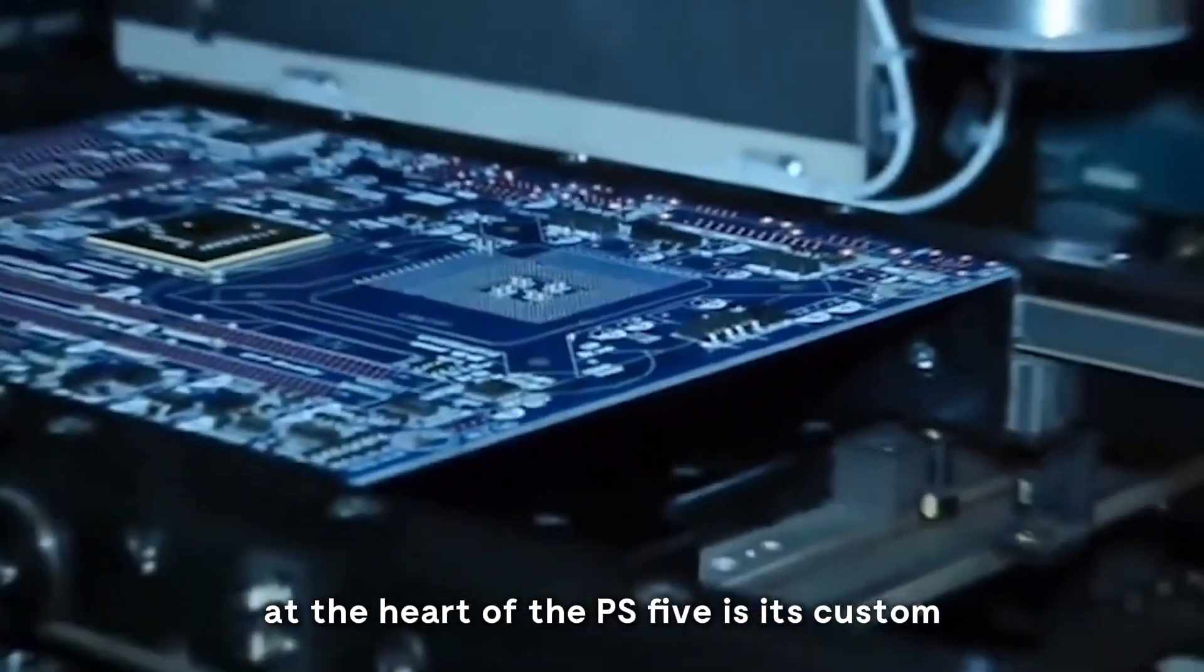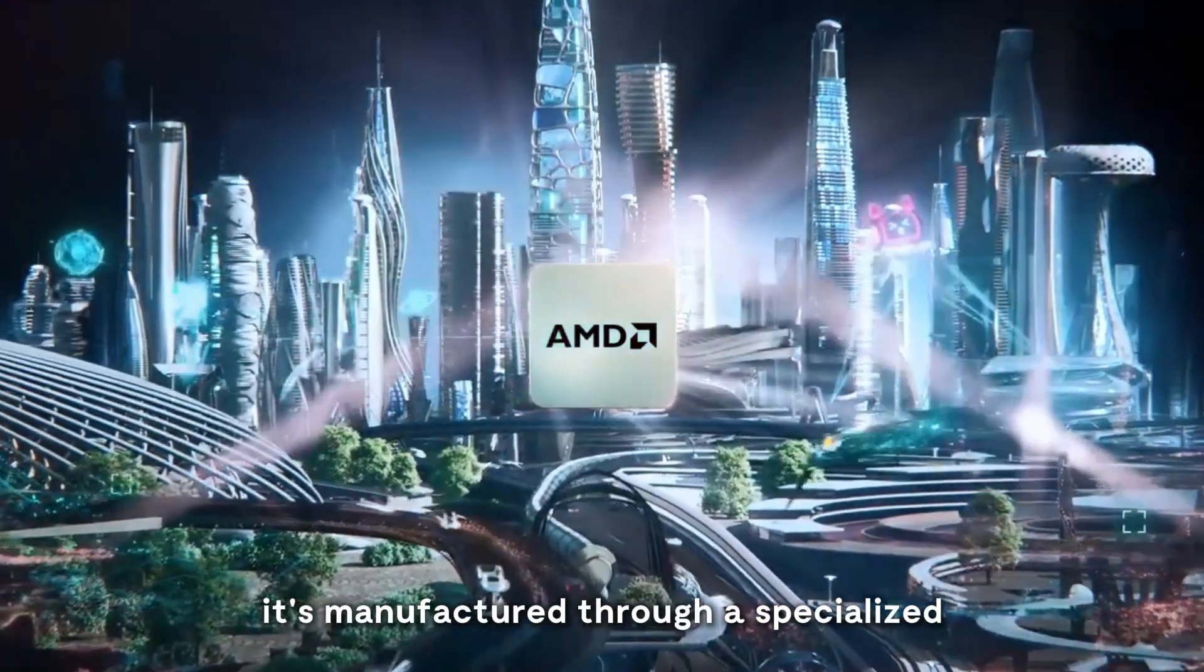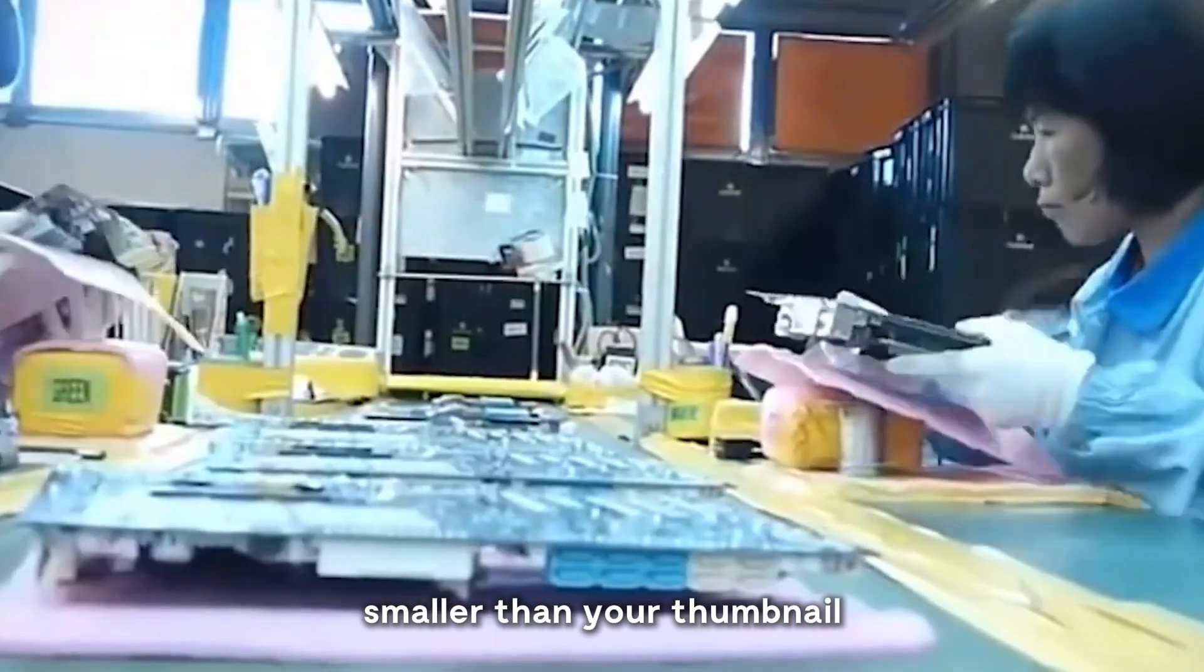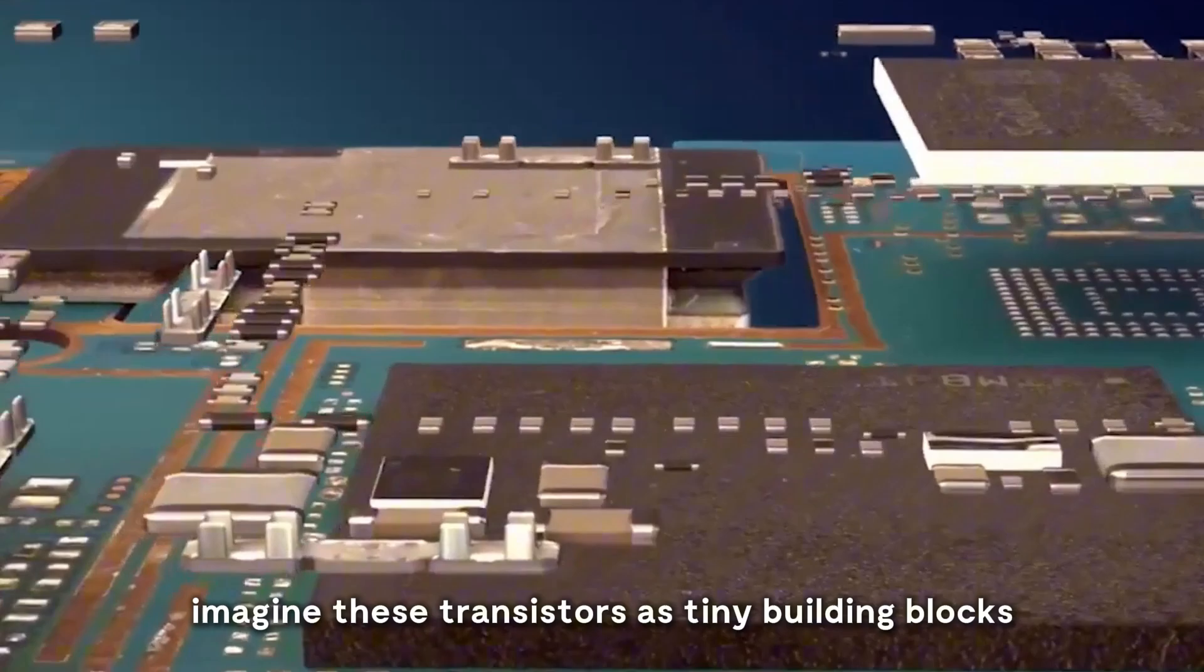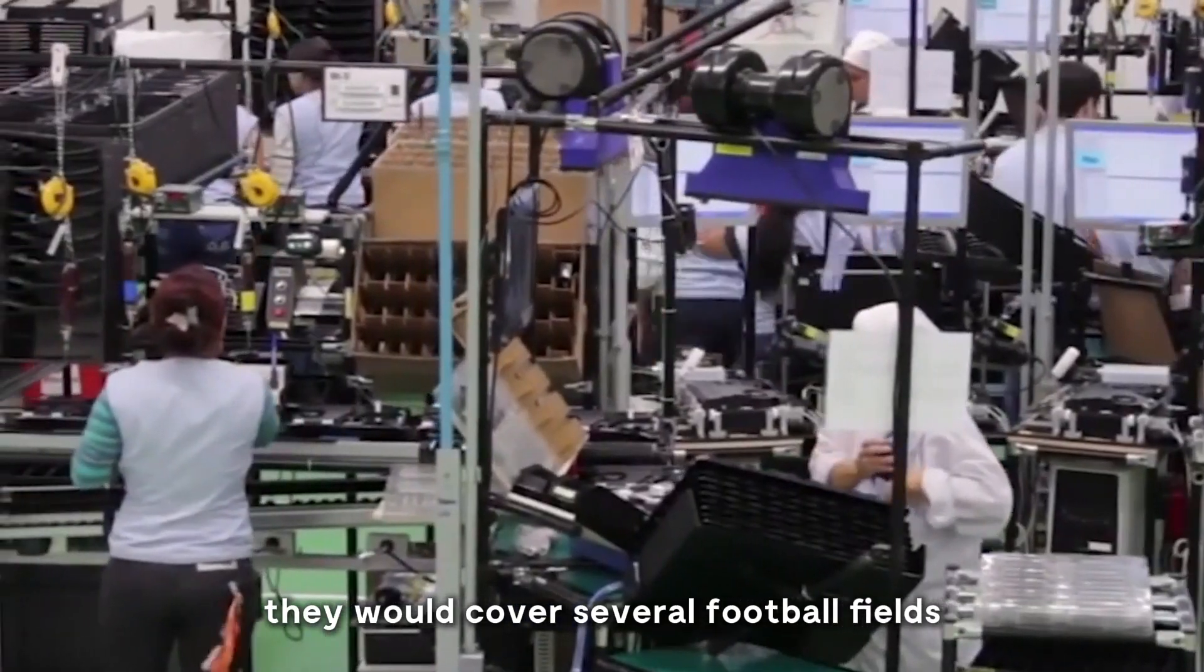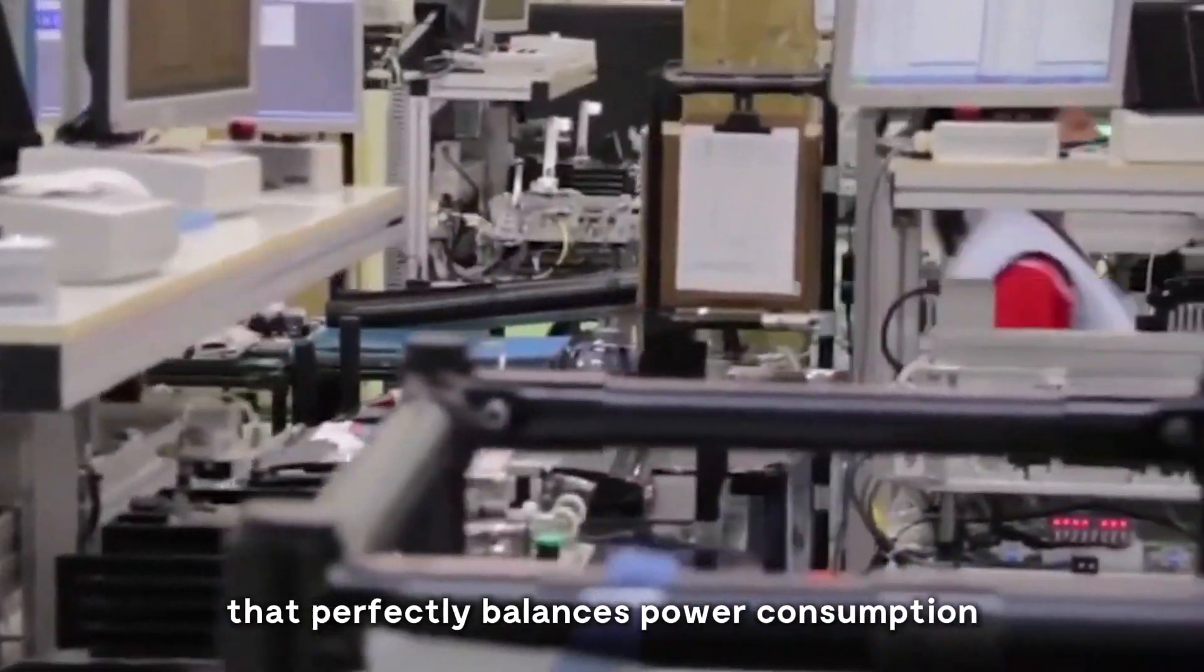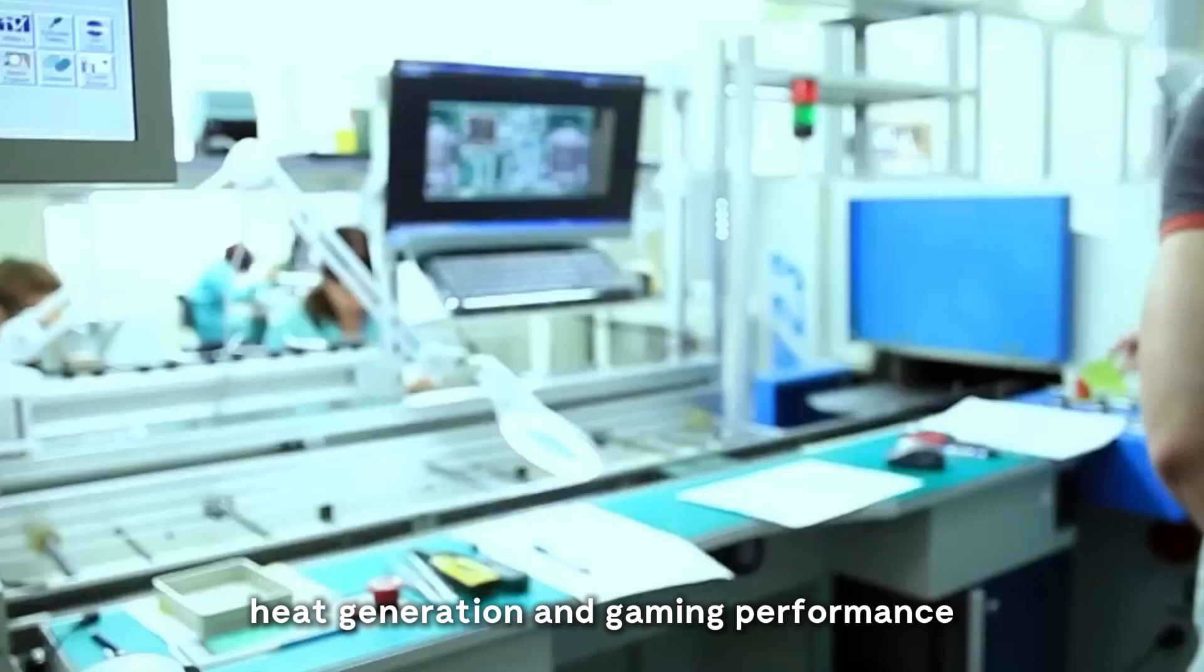At the heart of the PS5 is its custom AMD Ryzen processor. It's manufactured through a specialized 7-nanometer process that places billions of transistors on a chip smaller than your thumbnail. Imagine these transistors as tiny building blocks, forming a miniature city on silicon. If each were the size of a grain of rice, they would cover several football fields. Sony engineers work directly with AMD to create a unique version that perfectly balances power consumption, heat generation, and gaming performance.